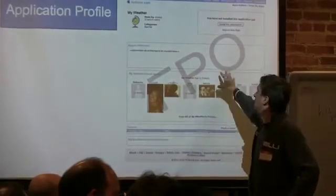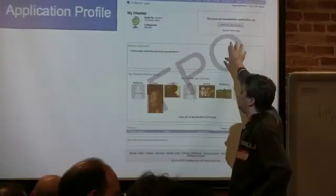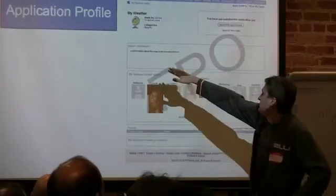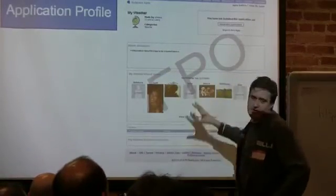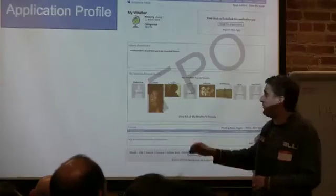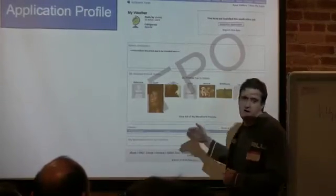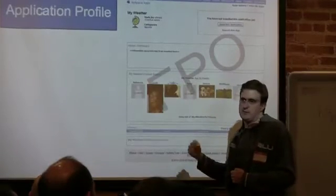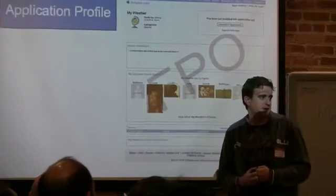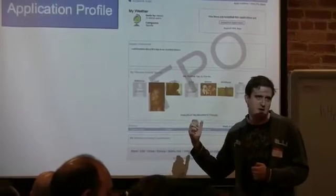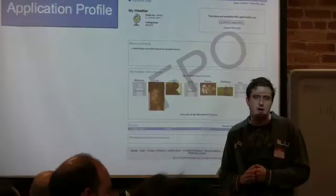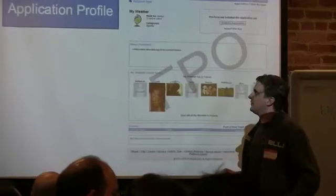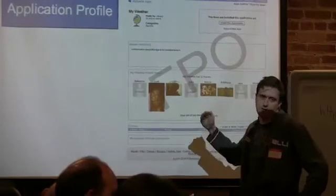The app profile is where users go to install the application. The top portion will be standard except for the images and select details. Pretty much everything below the line will be things that developers can control, including whether you have a forum, whether you have comments — which could be like reviews — and friends lists. We'll be adding more social functionality to that as we go along.